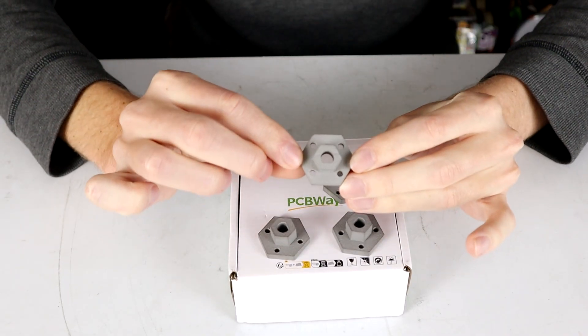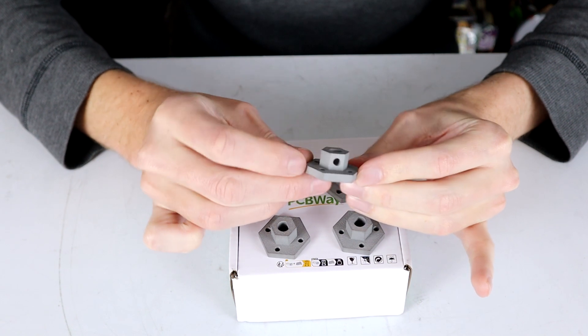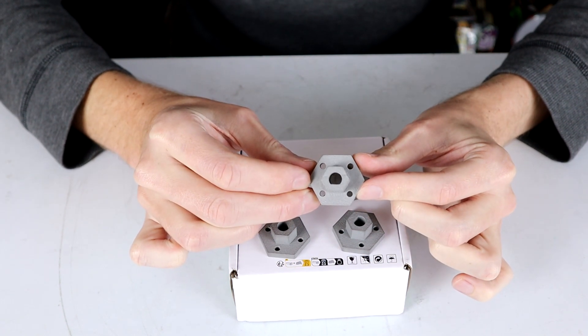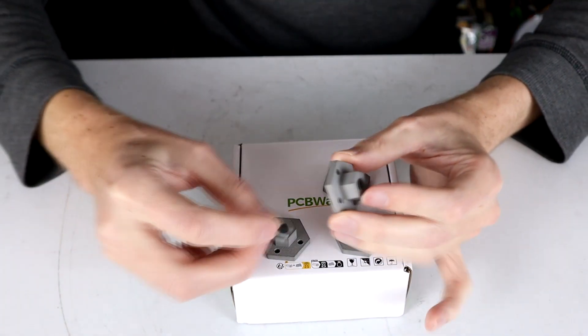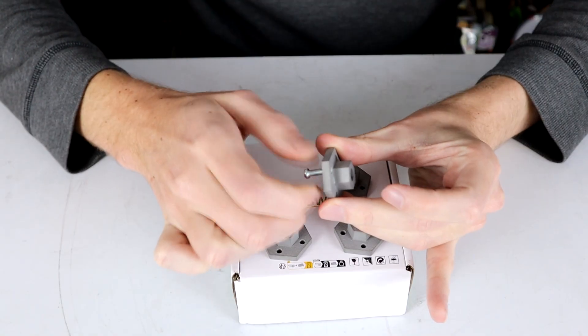These have the D shaft actually printed into them and they also have threads to hold an M5 grub screw and then also threads to hold M4s to hold the wheels on. These threads work directly from the factory, they just screw straight in.